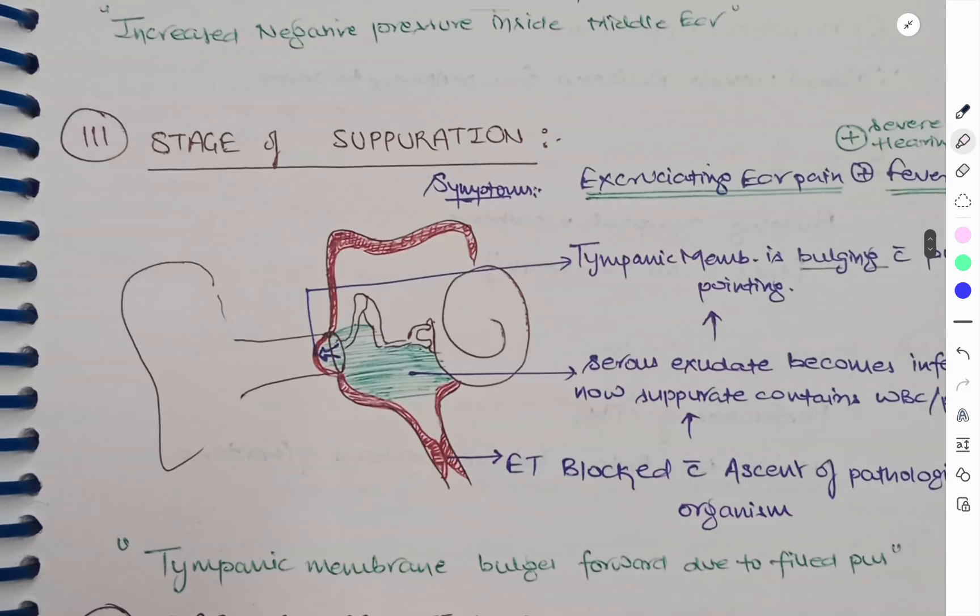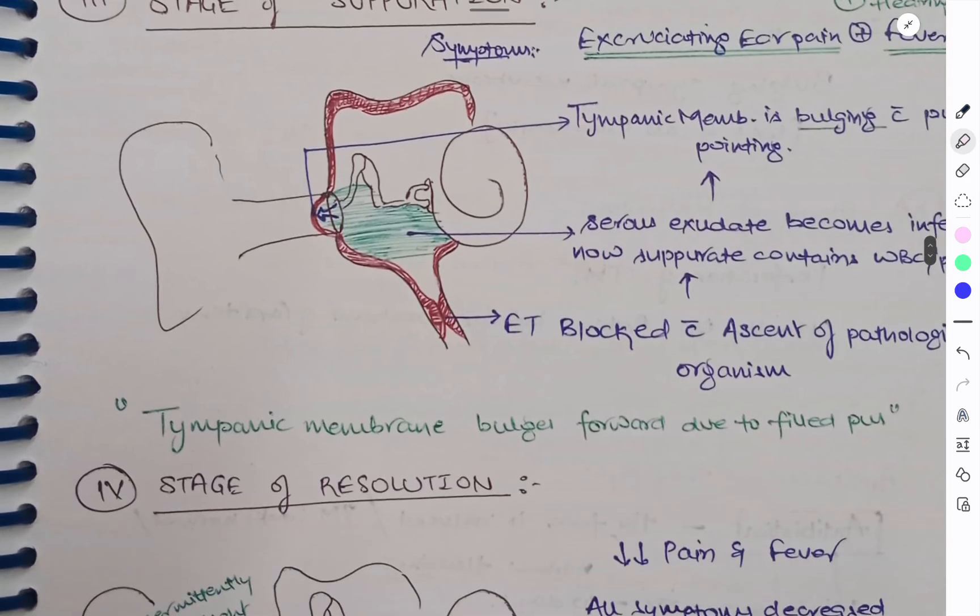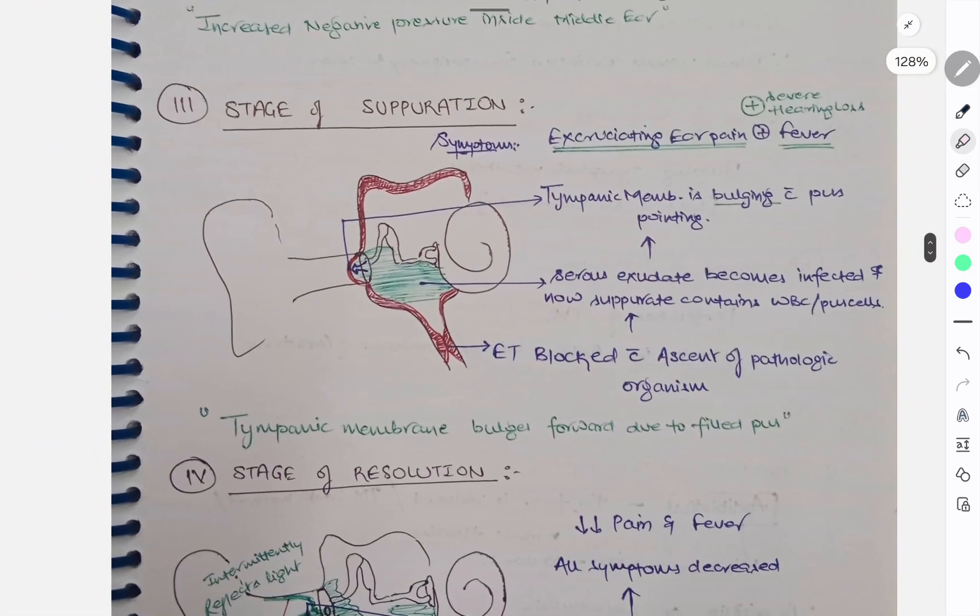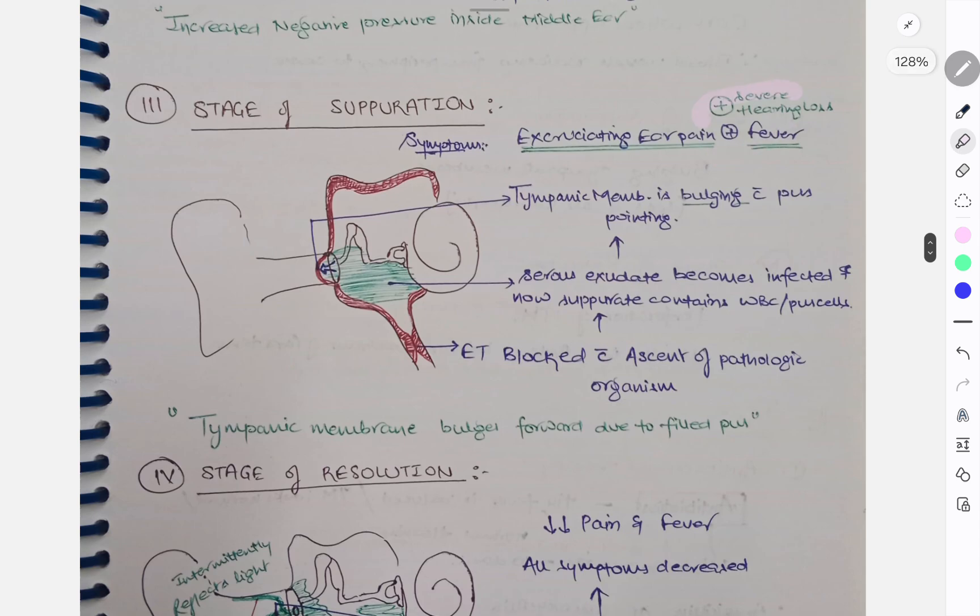Next stage is stage of suppuration. Again when there was ET tube blocked and ascent of pathological organisms was there. What happened? Due to this serous fluid, the tympanic membrane bulges forward. So you have this tympanic membrane bulging forward with pus pointing, and the symptoms are excruciating pain and fever plus severe hearing loss.